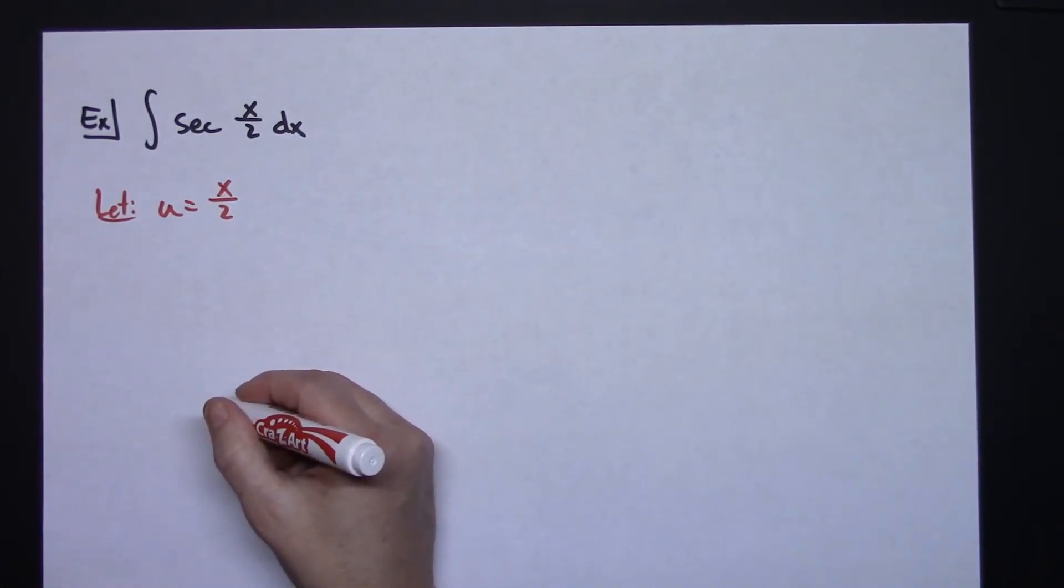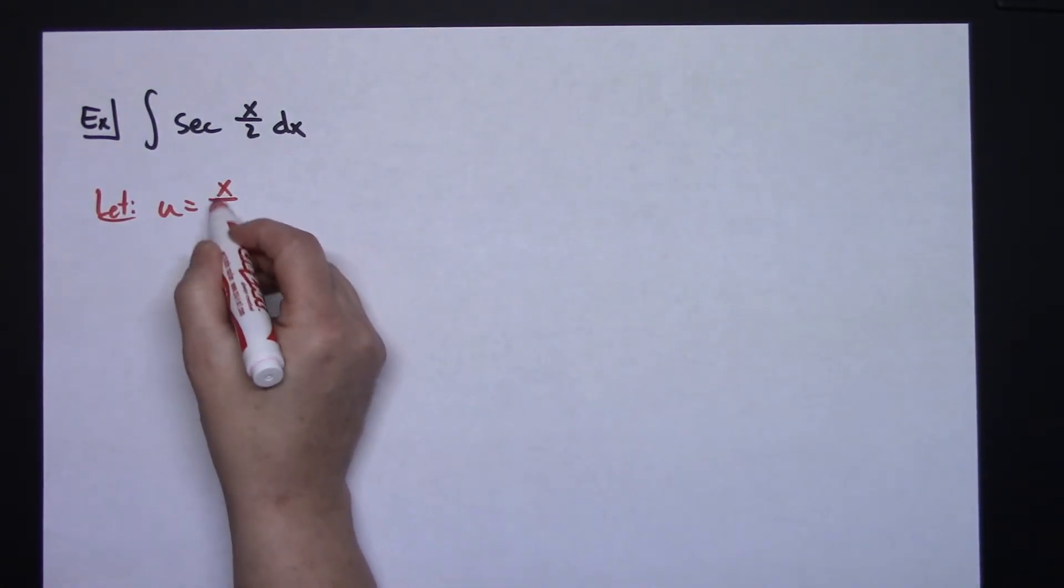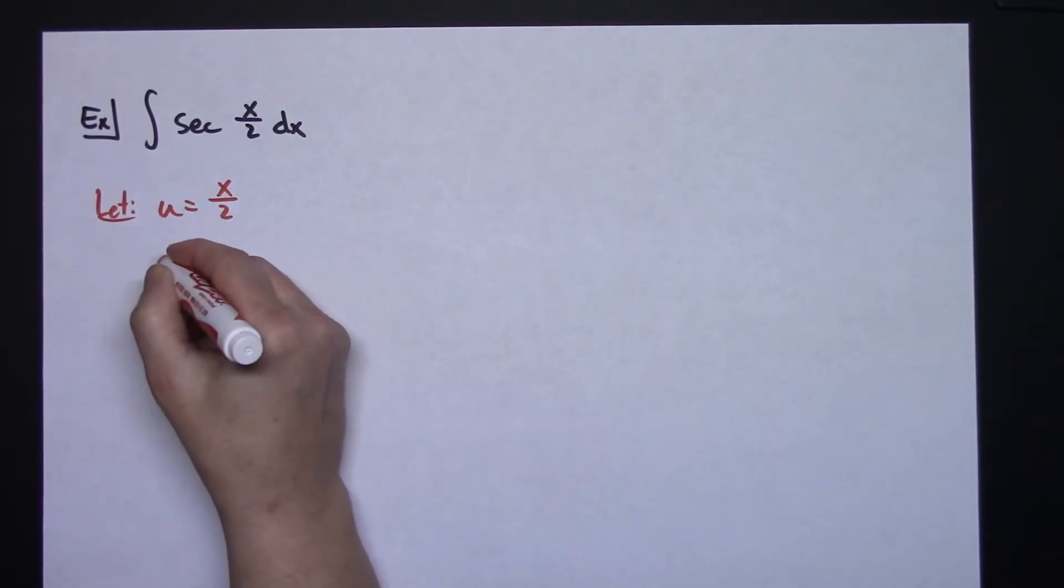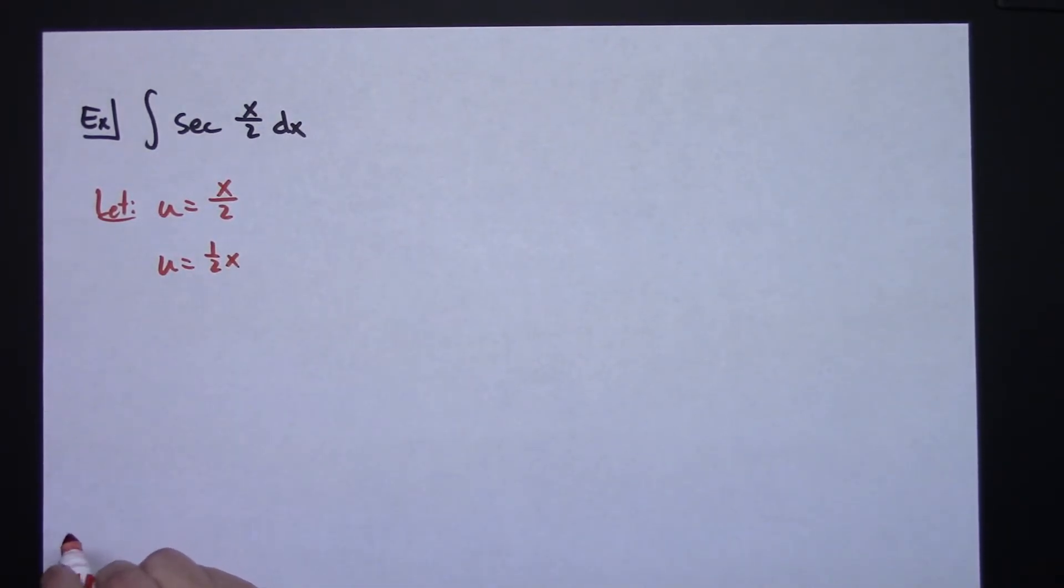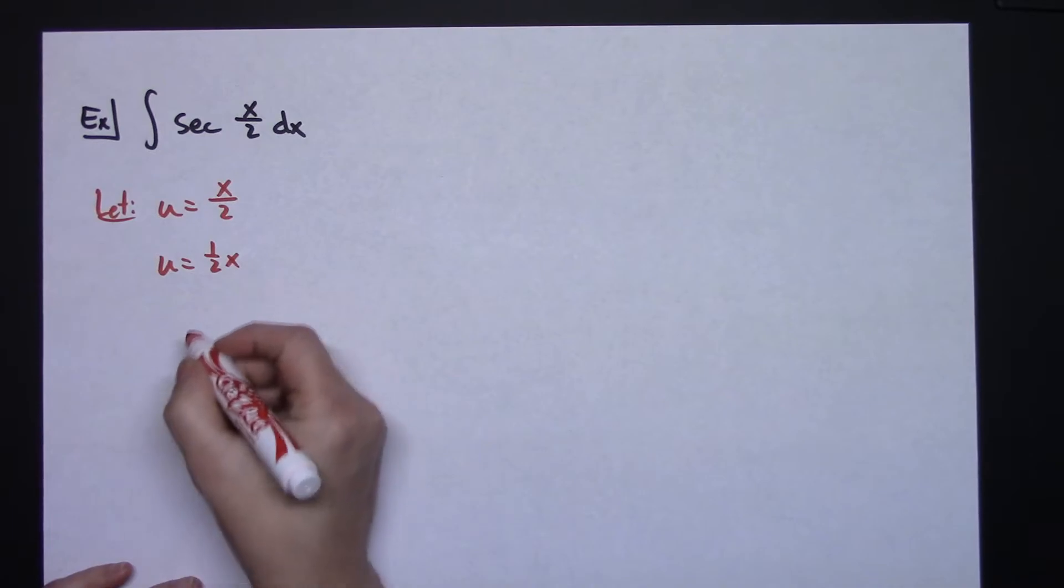Before I take the derivative it might be easier if you write that out so you can see the coefficient easily. So maybe u equals one-half x. For some people that may be easier to see.